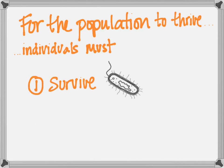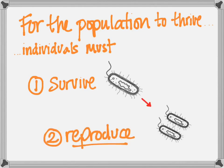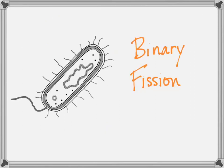They have to maintain the correct temperature and water balance, all that stuff. But they also have to reproduce if this population is going to survive and thrive. The process that bacteria use to reproduce is an asexual process called binary fission.